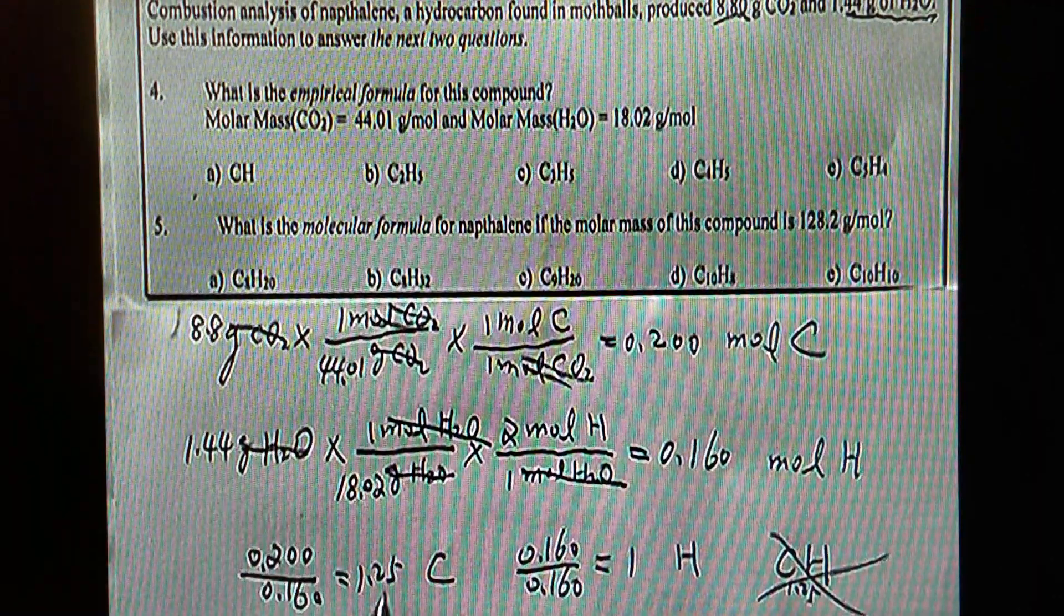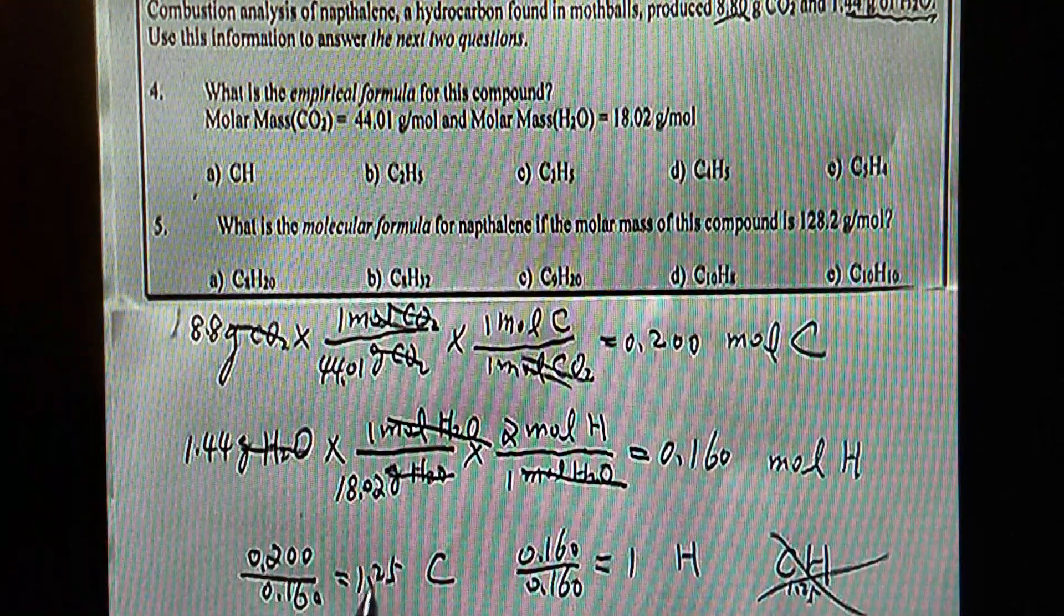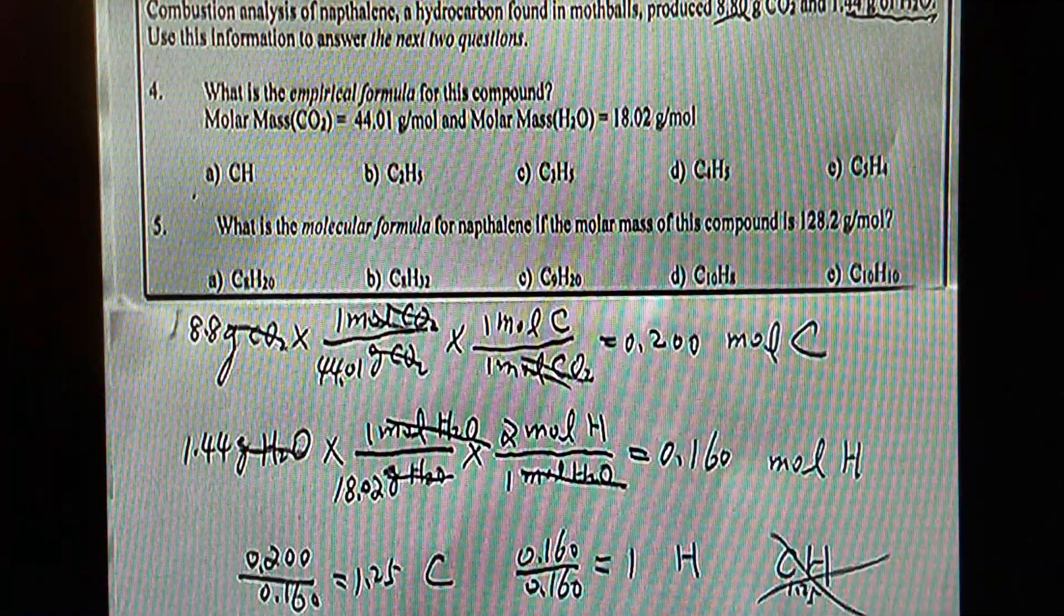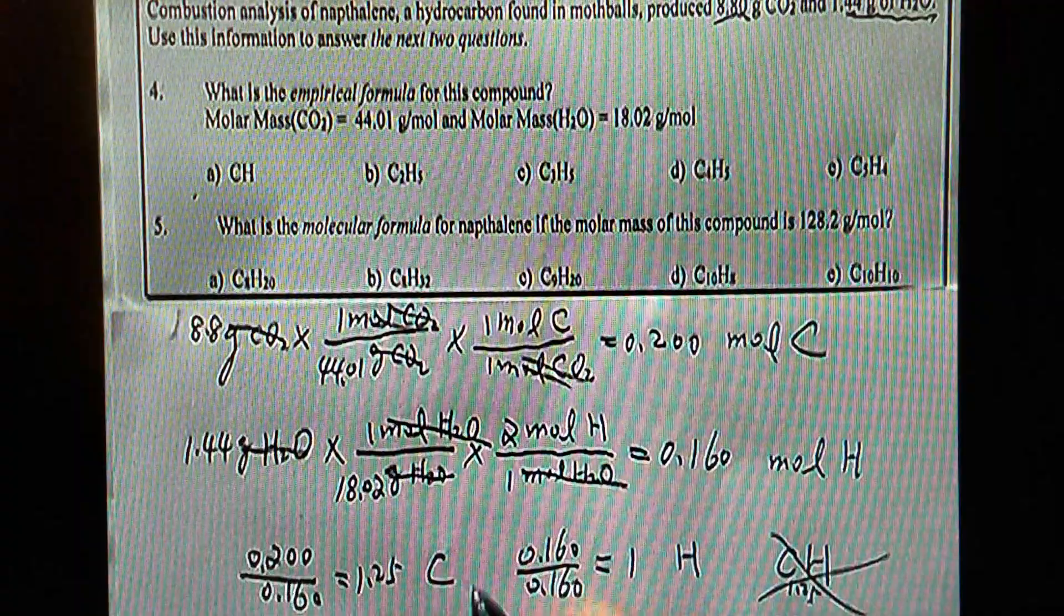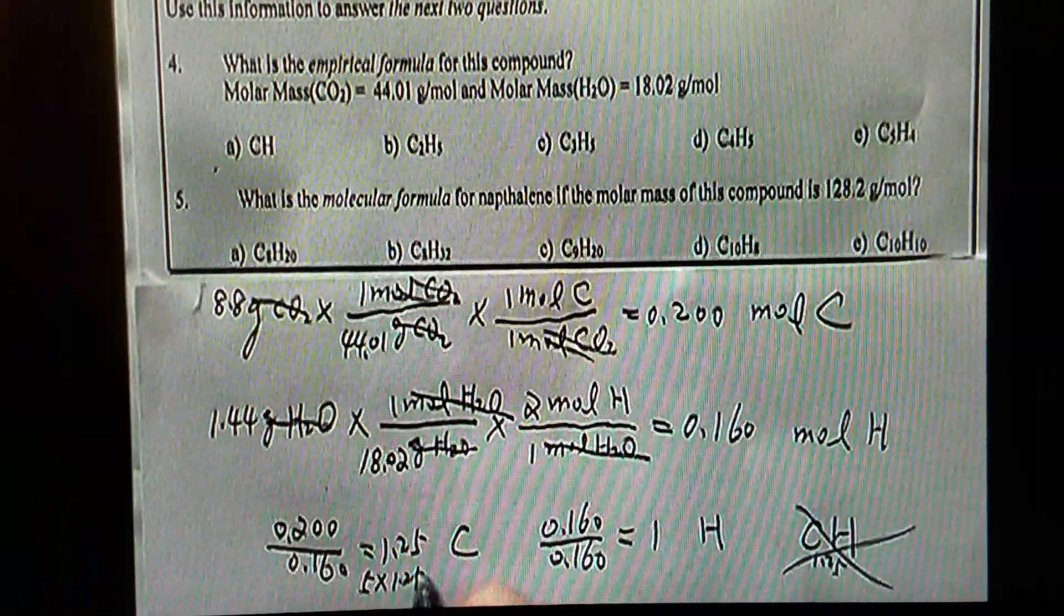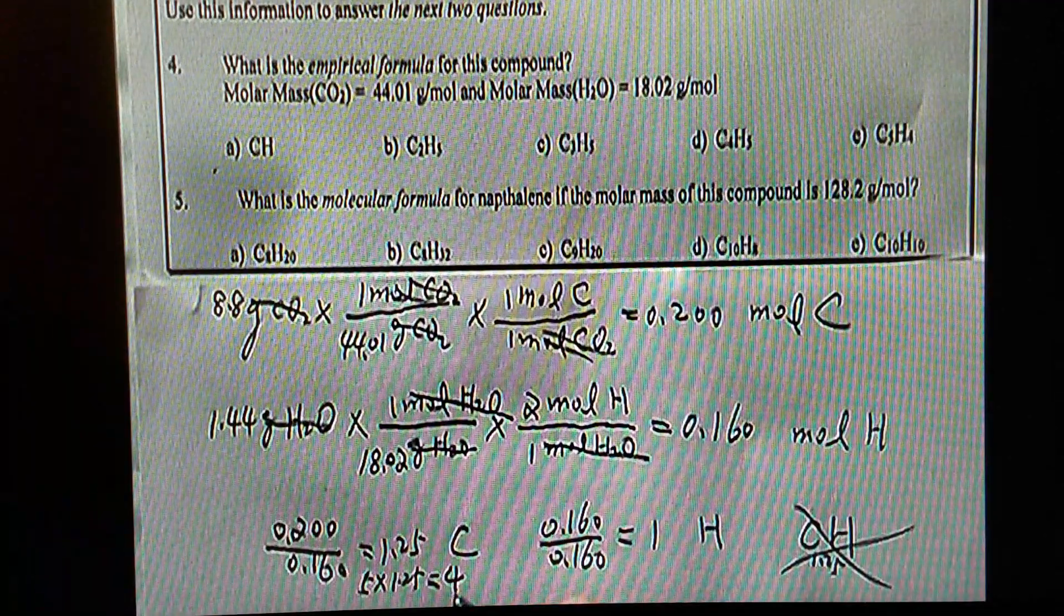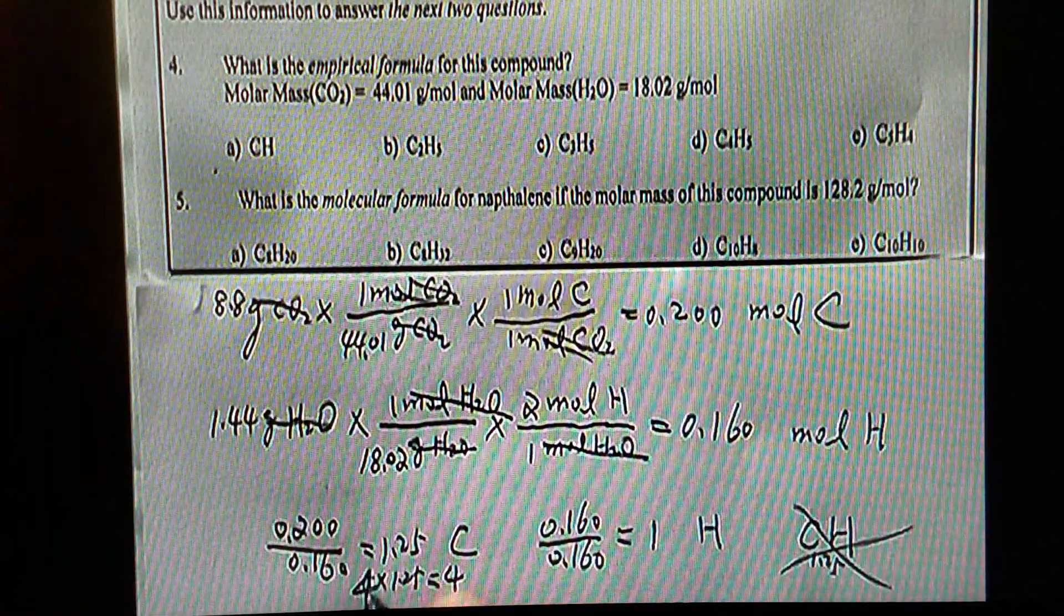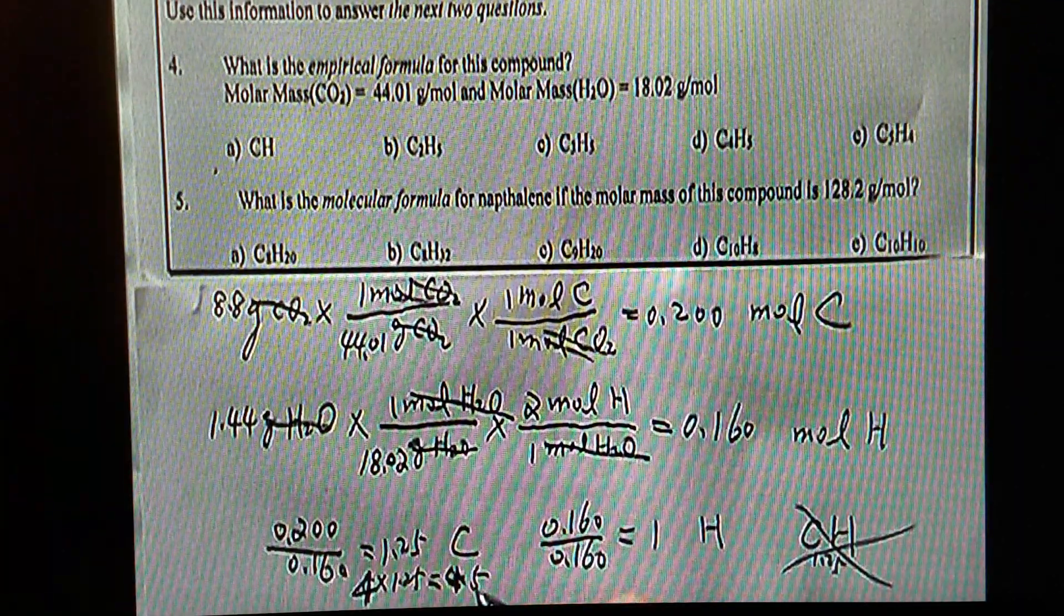So, which means, 1.25, if I times 4, that would give me 5. 1.25 times 4, that should give me 5. Therefore, I want to multiply those ratios by a factor of 4. I'll just simply do this: 4 times 1.25, that equals 5. I'm sorry, it should be timing 4. 4 times 1.25 gives us 5.